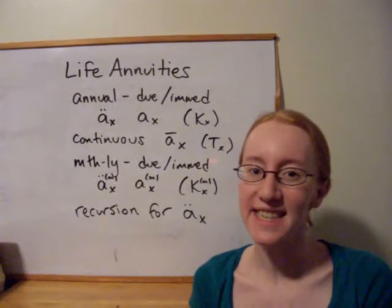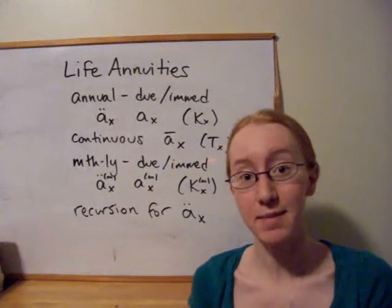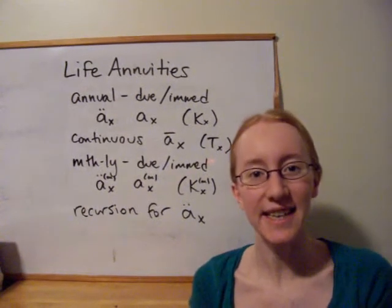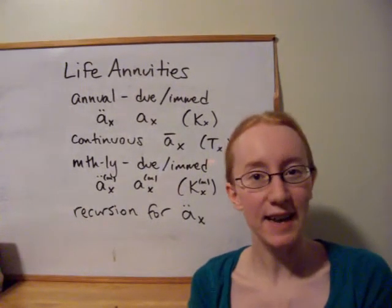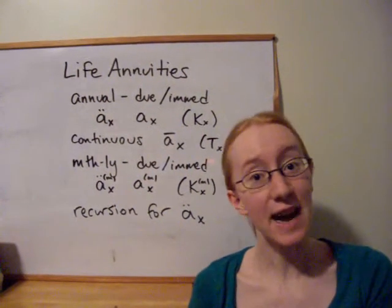And the third way, which is probably the nicest, is to use the same principle we used in the life insurance case. We always want to sum up, or integrate in the continuous case, the amount paid times a discount factor times the probability that the payment is made.